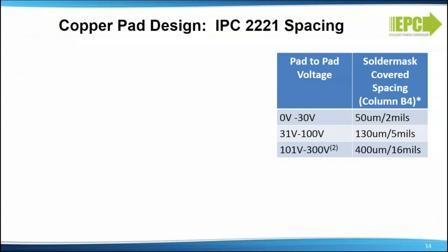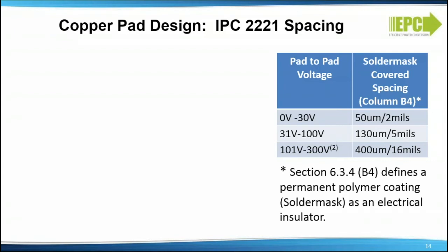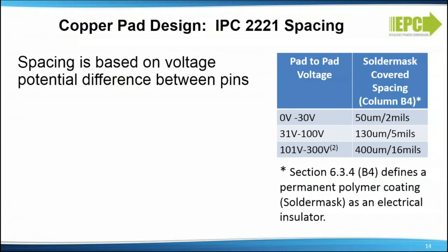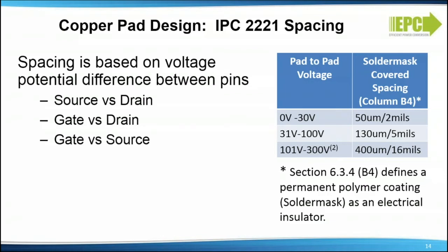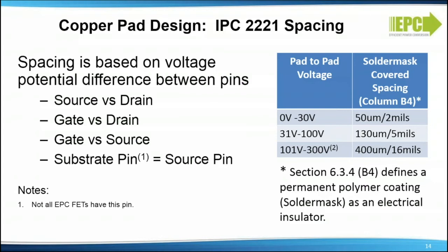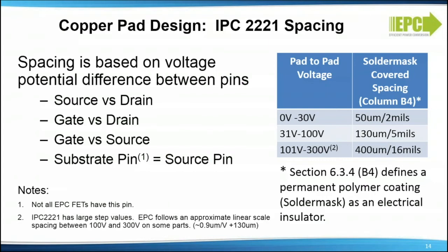Copper pad IPC 2221 spacing: IPC 2221 is the generic standard on PCB board design. Section 6 defines electrical spacing between conductors. The table shown is a consolidated version of table 6-1 specifically for conductor spacing under solder mask. Section 6.3.4 defines a permanent polymer coating — in other words, solder mask — as an electrical insulator. Spacing is based on the voltage potential difference between pins: source versus drain, gate versus drain, gate versus source. Treat the substrate pin as a source pin — note that not all EPC FETs have this pin. Also note IPC 2221 has large step values; EPC uses linear scale spacing between 100 and 300 volts on some parts.